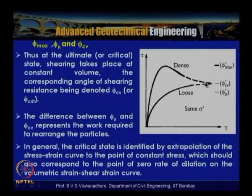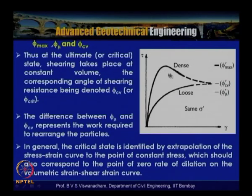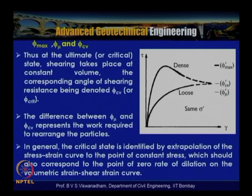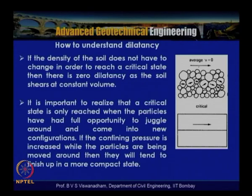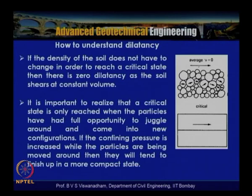The critical void ratio is the void ratio at which no volume change occurs during shearing. At constant volume, the friction angle is called the critical friction angle or phi_cv. If the soil density does not need to change to reach the critical state, there is zero dilatancy as the soil shears at constant volume.